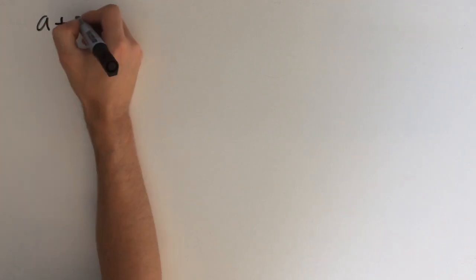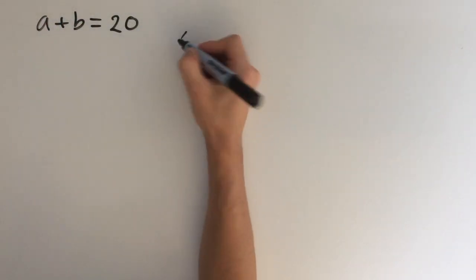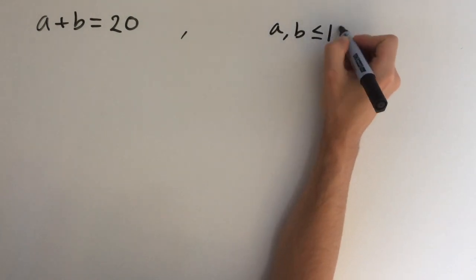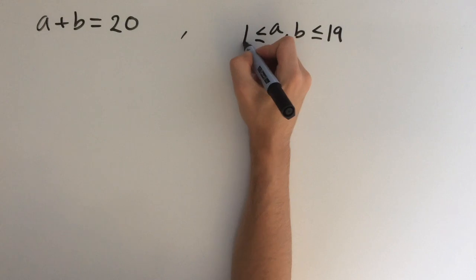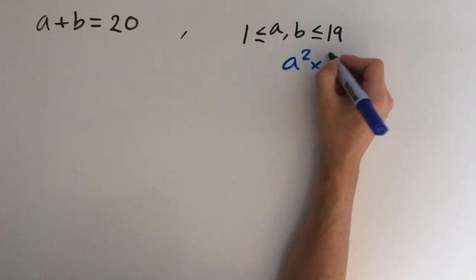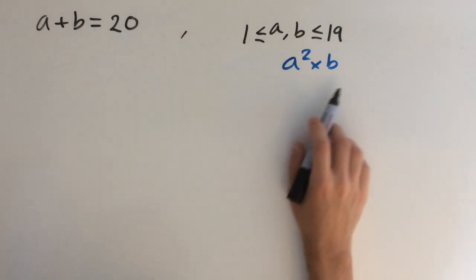We know that a plus b equals 20, and a and b are both positive integers. This limits the values of a and b. They both have to be less than or equal to 19, and greater than or equal to 1. We want to maximize a squared times b. The way we're going to do this is by substituting one of these values into this expression right here.